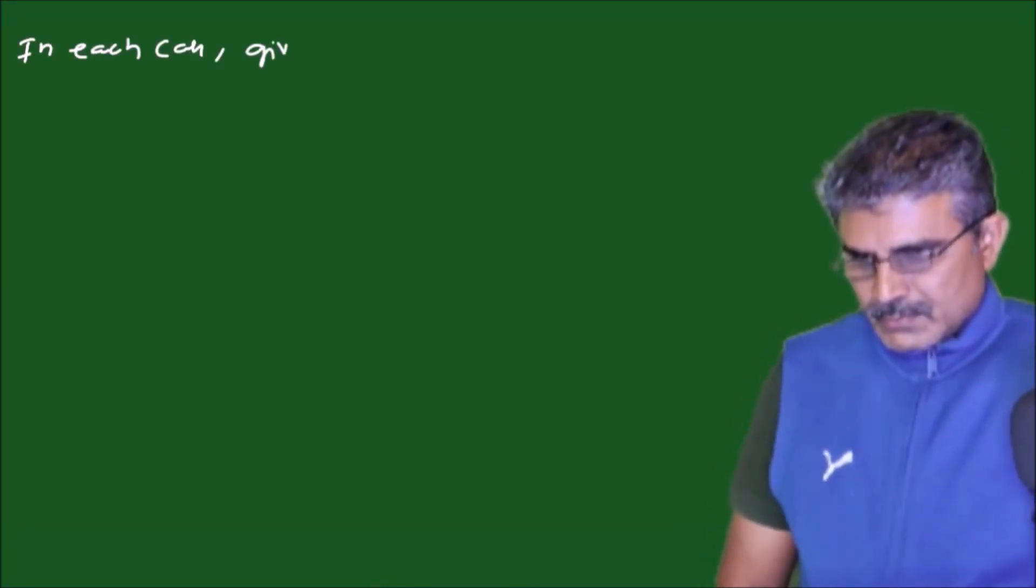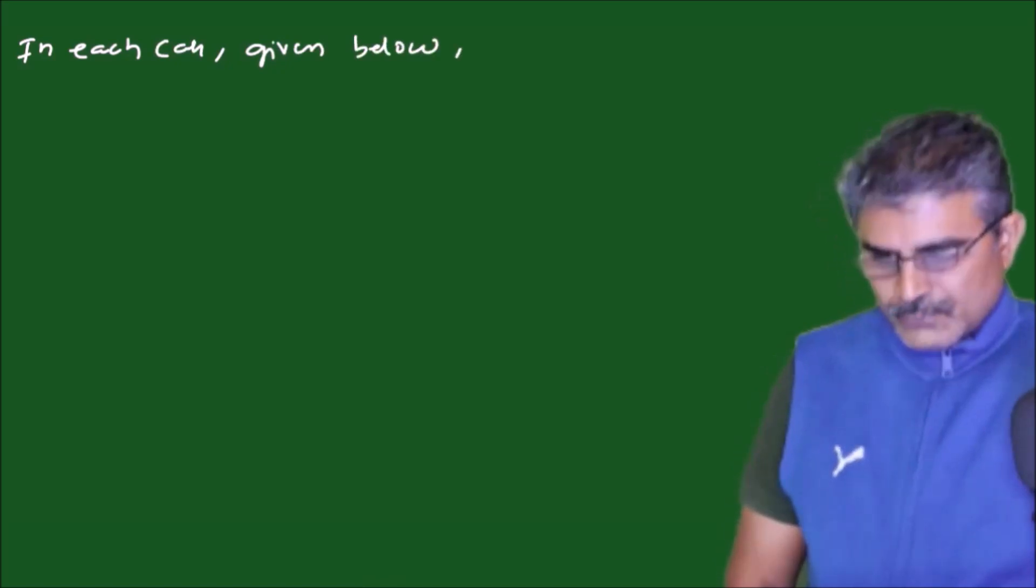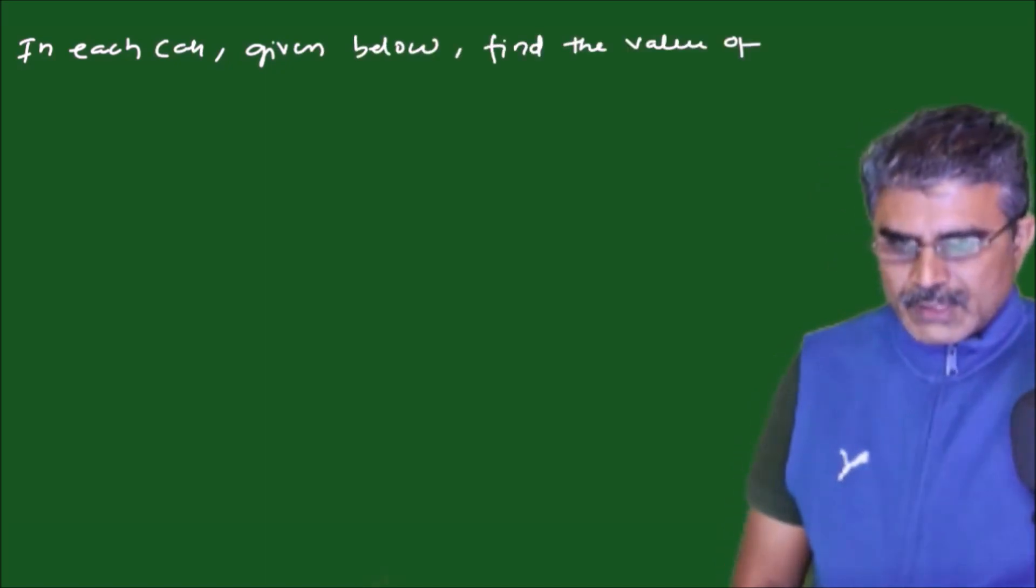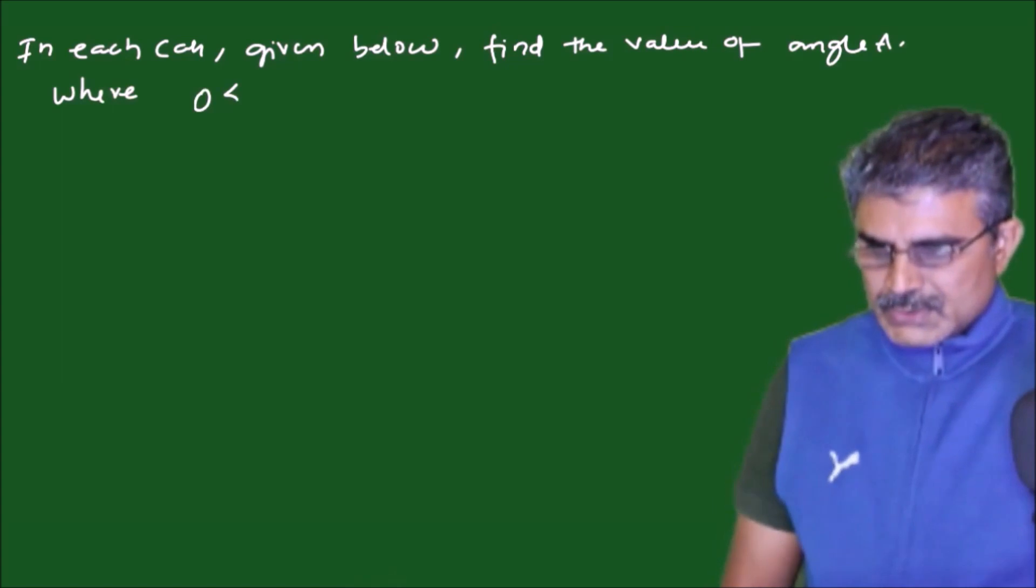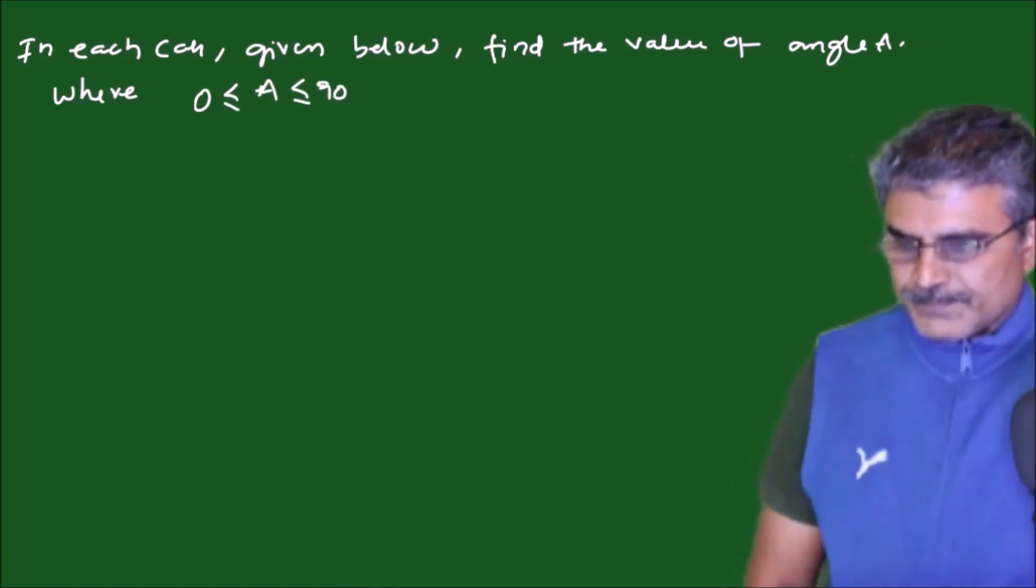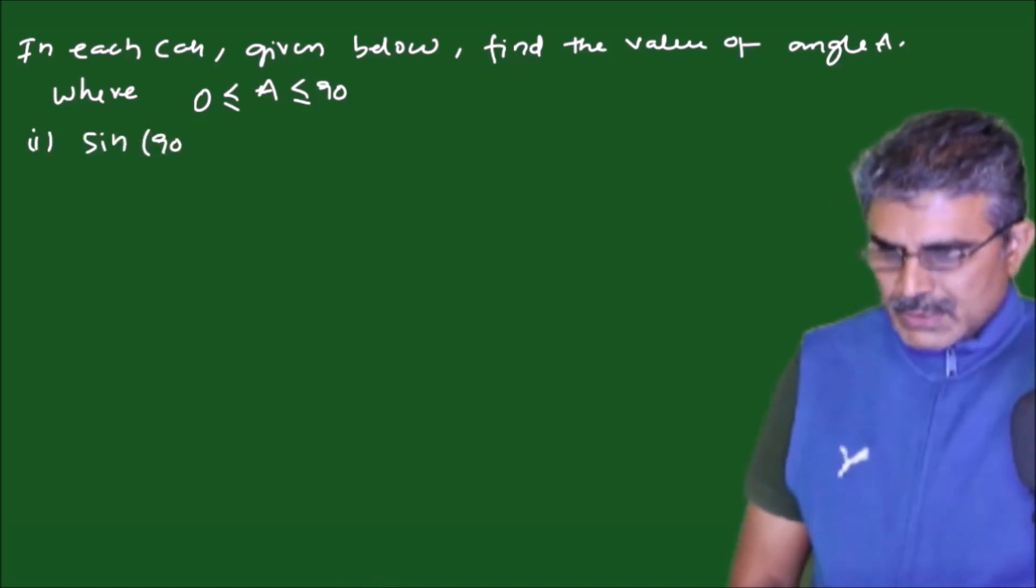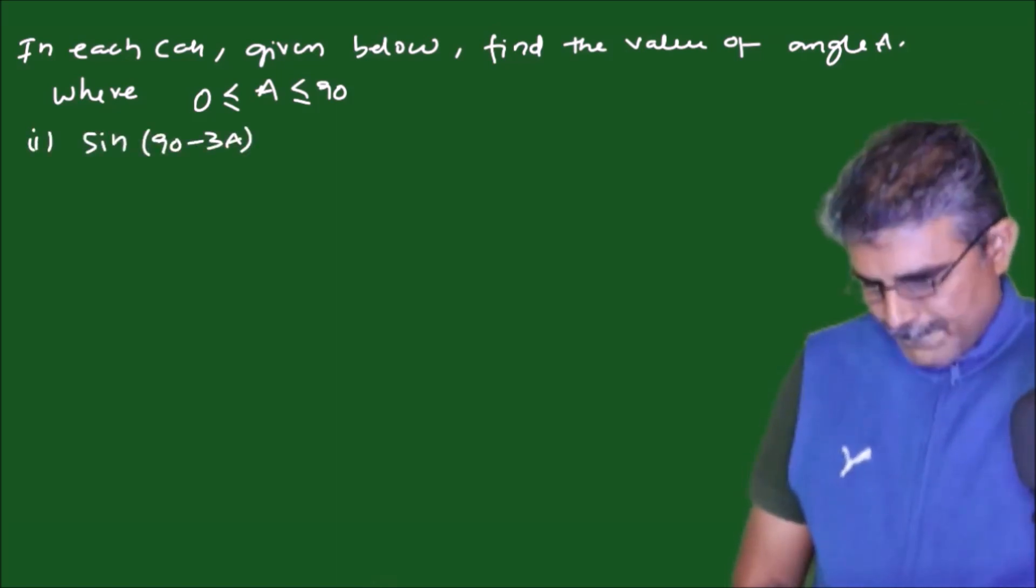Our next question is in each case given below find the value of angle A where 0 less than or equal to A less than or equal to 90 and the given cases are sin(90 minus 3A) into cosecant 4 equals 1.